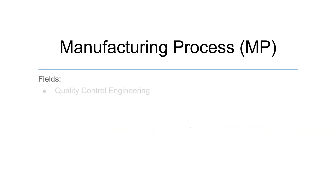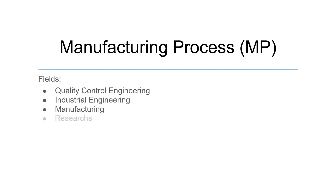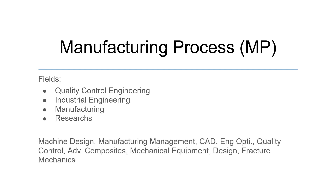Manufacturing Process is involved in quality control engineering, industrial engineering, and the manufacturing domain. There is a lot of research happening around making products with less material, cost-effectively, and with higher quality. If you enjoyed studying Manufacturing Process, you will also enjoy courses like machine design, manufacturing management, computer-aided design, engineering optimization, quality control, advanced composites, mechanical equipment design, and fracture mechanics. Some of these are elective courses you can opt for. I hope I covered everything — do comment if you have any queries, and I'll share the course handout in the description.